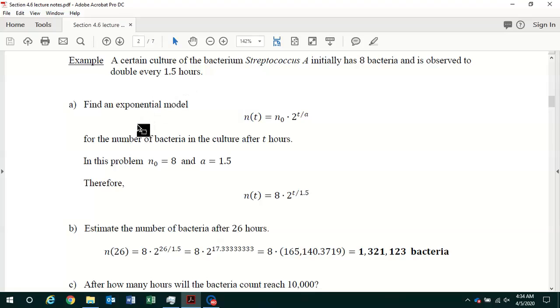In part A, you're asked to find an exponential model of the form discussed on the previous page. In this problem, we're given that the initial population is 8 bacteria, and it doubles every 1.5 hours. So our exponential model is n of t equals 8 times 2 to the t over 1.5 power.